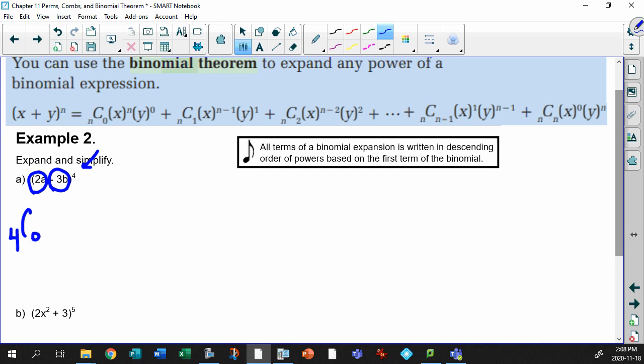4 choose 0, 4 choose 1, 4 choose 2, 4 choose 3, and finally 4 choose 4. There's our 1, 2, 3, 4, 5 terms, as predicted.